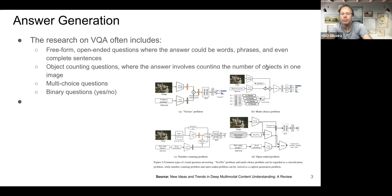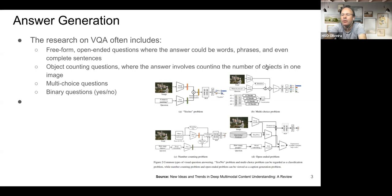Normally in visual question answering we can have many types of answers. Sometimes reform or open-ended questions where answers can be phrases, words, or complete sentences. Often object counting — for example, how many instances of this object are in the scene. Also multiple choice questions where you rank the highest candidate answer, and binary questions such as whether an object is in a scene or not.